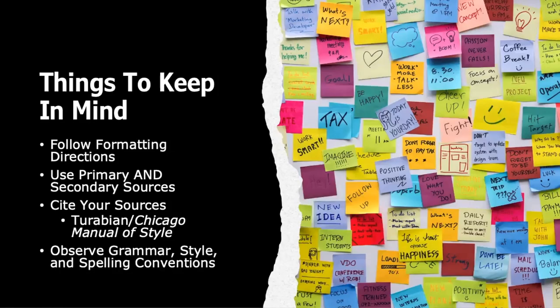Finally, some things to keep in mind when you're answering your essay: make sure you revisit and adhere to the formatting directions your instructor provides. Make sure that you're using primary and secondary sources, and that you cite your sources as necessary, following the format historians use — Turabian or Chicago Manual Style. In your essay or discussion response, observe proper grammar, stylistic, and spelling conventions. Communication is very important; it's key to developing an answer that is readable and understood by others. I hope this helps you formulate a response to an essay, discussion, or other assignment prompt in your history class.